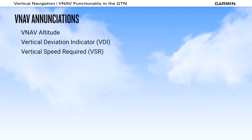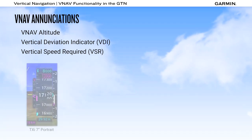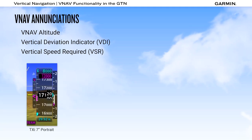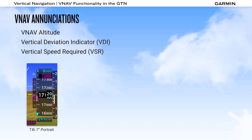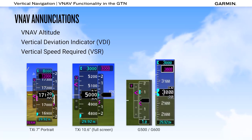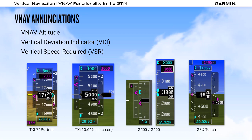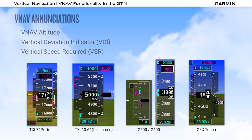During our demonstrations, we have been showing VNAV enunciations on a Garmin TXI 7-inch portrait display. Similar indications will be observed on a TXI 10.6-inch display, the G500-600 display, and on the G3X touch display. While these indications vary slightly between devices, in all cases the indications are very intuitive and easy to interpret.